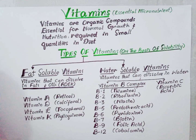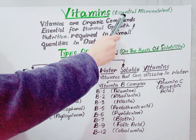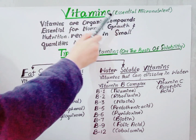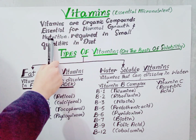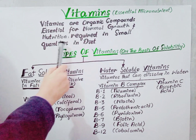Hello everyone, welcome to Learn Science with me. Today we have another important topic which are vitamins. Vitamins are organic compounds and essential micronutrients which an organism needs in small quantities for the proper functioning of its metabolism. These are organic compounds essential for normal growth and nutrition, but required in small quantities in the diet.